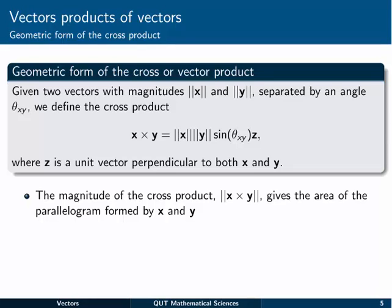It looks a little bit similar to what we found with the dot product, because it has a magnitude of x and a magnitude of y, and then something to do with the angle between the vectors. This time it's a sine instead of a cosine. But there's this funny vector hanging on at the end. z is just a unit vector perpendicular to both x and y. Sometimes that's useful.